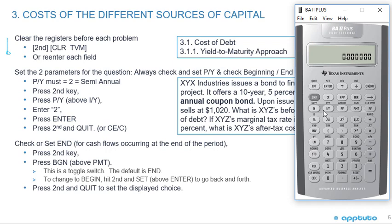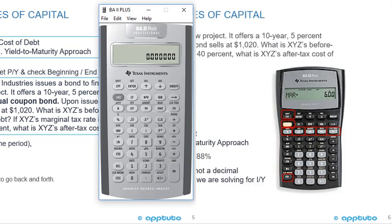So two things always when looking at bonds: check second P/Y for the payment frequency — semi-annual or annual — and make sure that you're in ending mode.